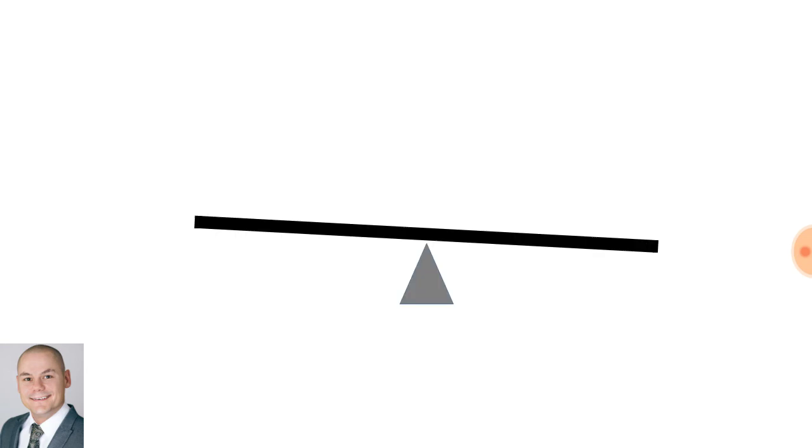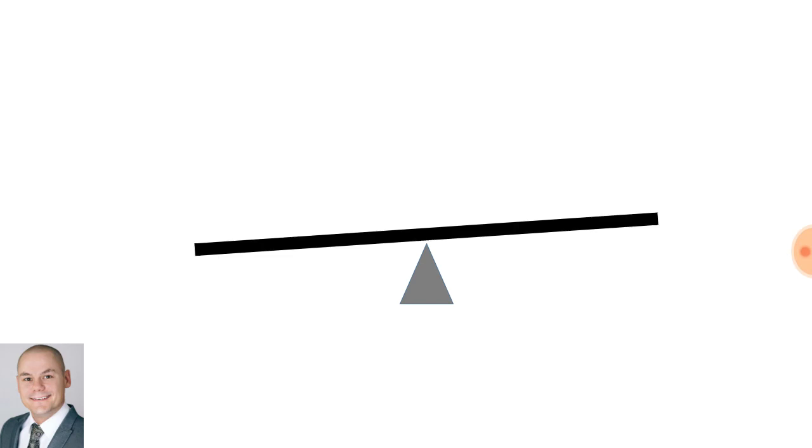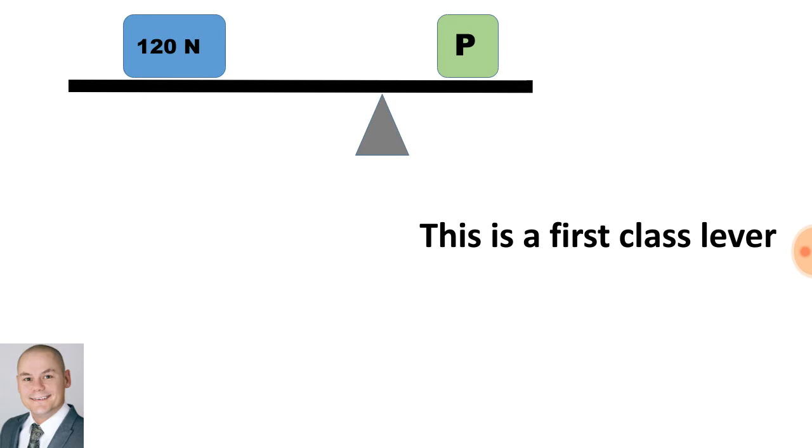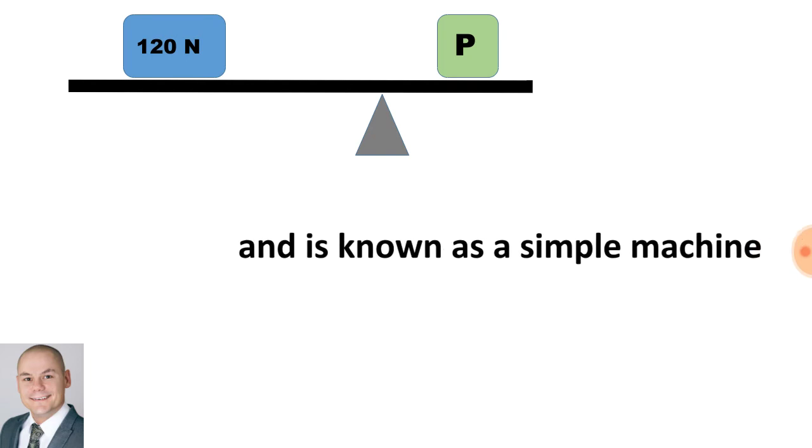Now, a one fulcrum beam is basically a beam that is hinging or moving about a particular point, which is a fulcrum. This is a first class lever and is known as a simple machine.